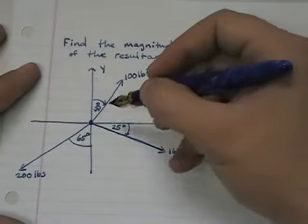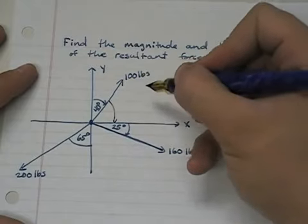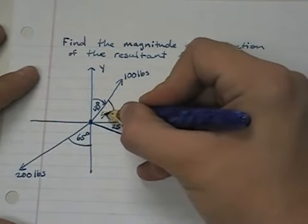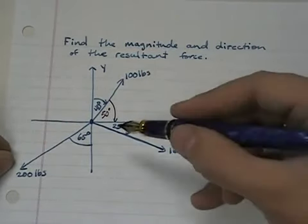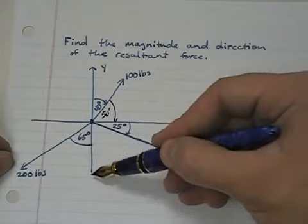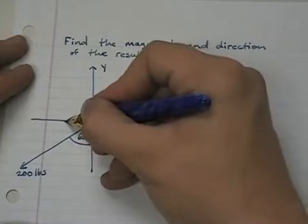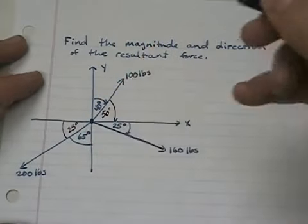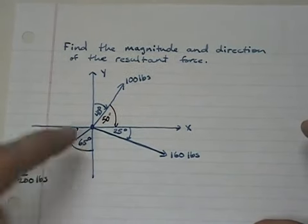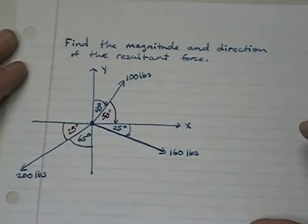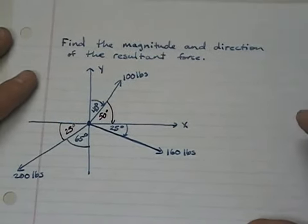So we have to find the complement of 40 degrees for this angle, the 100 pound force. That's really easy, that's 50 degrees. And this 200 pound force has a 65 degree angle, but you notice it's with the y-axis, so we have to find the complement of that, which is also real easy, it's 25 degrees. Remember, complements are just taking the angle and subtracting it from 90.